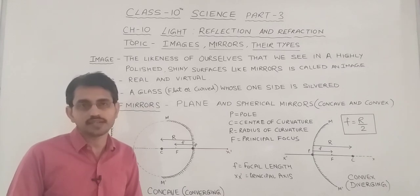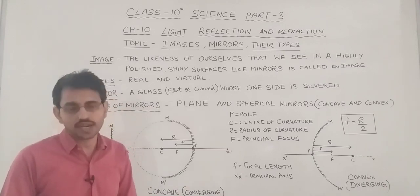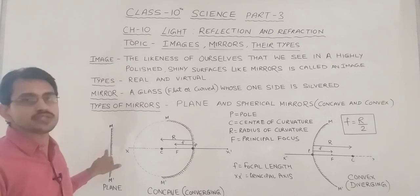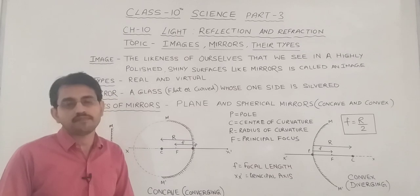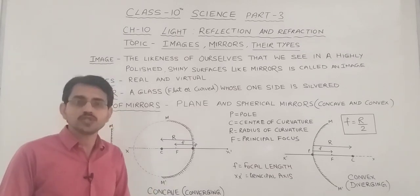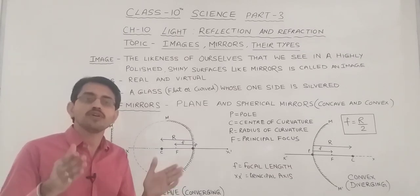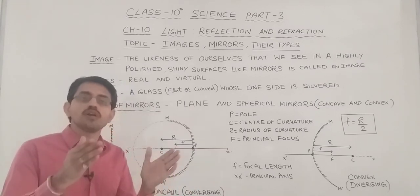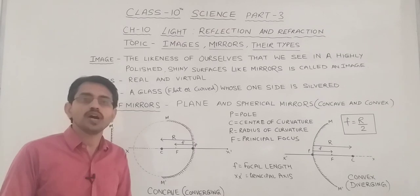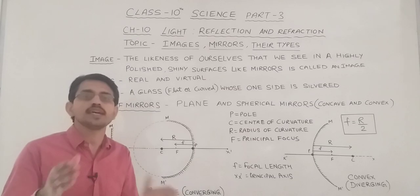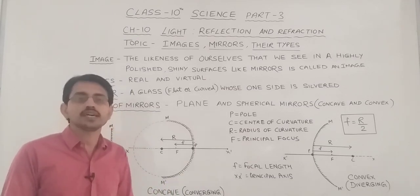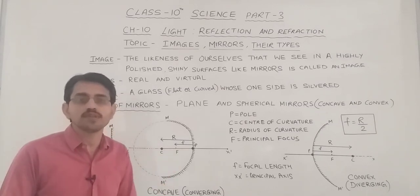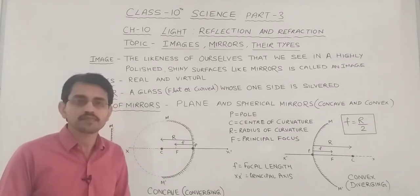Real image can be obtained on a screen because it is formed due to the actual intersection of light rays, but virtual image cannot be obtained on a screen. The image found by a plane mirror is always of the same size as the object. It is always at the same distance — if you are standing in front of a plane mirror at a distance of 10 cm, your image would also be 10 cm away from the mirror. The distance of the image and the distance of the object from the plane mirror is always equal.